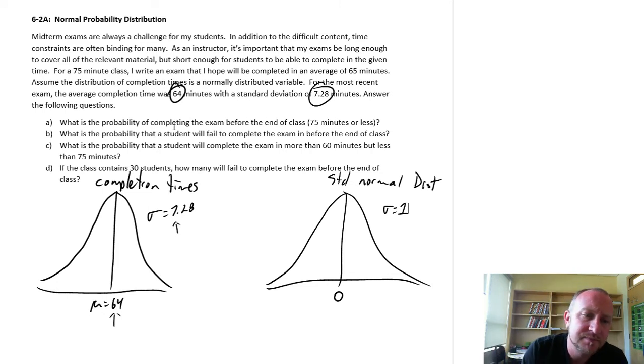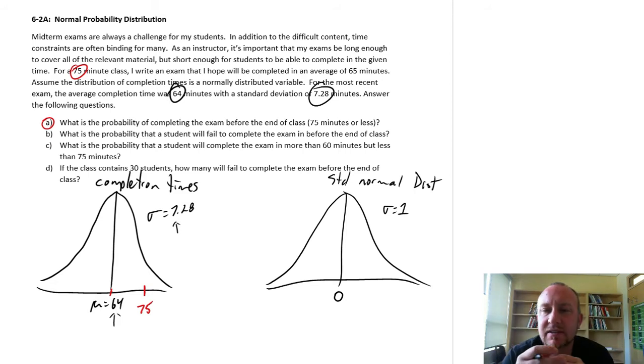Basically what we are doing is, from this distribution of completion times, I draw some value of interest. And in this case, if we look at part A, we're saying what is the probability of completing an exam before the end of class? So end of class is 75 minutes. So from this distribution of completion times, if this is 64 here, then let's say 75 is up here somewhere. So there's our 75 minute marker, there's our value of interest from this distribution of completion times.